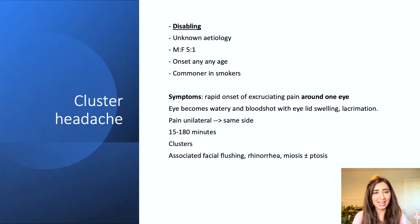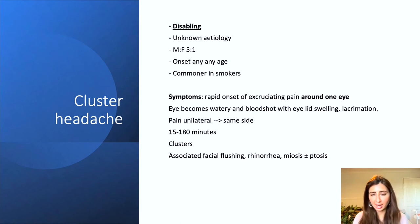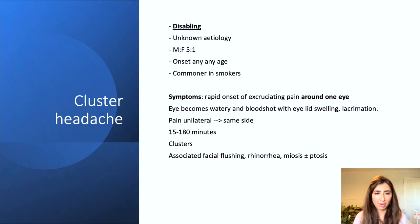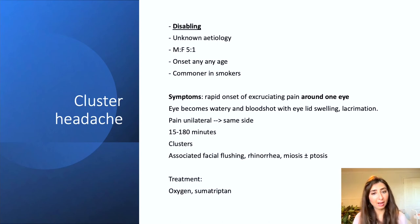Cluster headaches, as the name suggests, occur in clusters — one to twice a day for four to twelve weeks, followed by a pain-free period of anything from months to years. Associated with this unilateral headache we have facial flushing, rhinorrhoea, miosis (constriction of the pupil), and ptosis. The treatment is high-dose oxygen and sumatriptan.